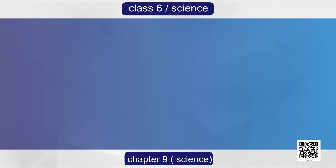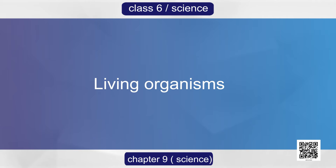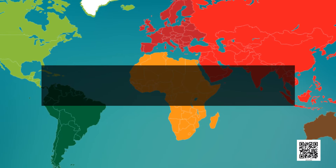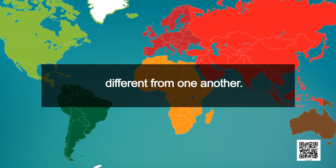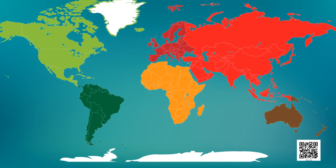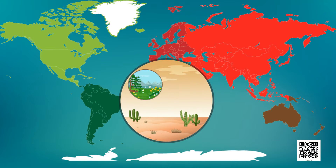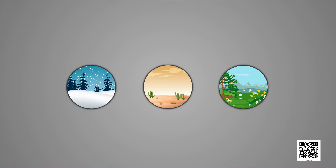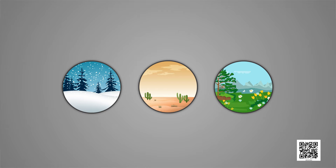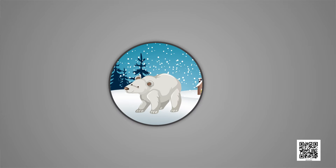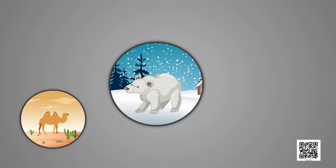First of all, we will discuss about living organisms and the surroundings where they live. You all know that the places in this world are different from one another. Some places are very cold, some are hot, some places are dry whereas some places are humid. All the places have different climatic conditions and specialties, and all of them have many organisms of various kinds. For example, polar bears are found in cold areas whereas camels are present in dry or desert areas.